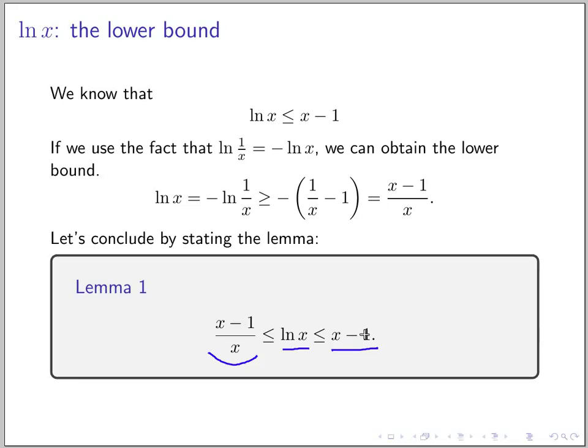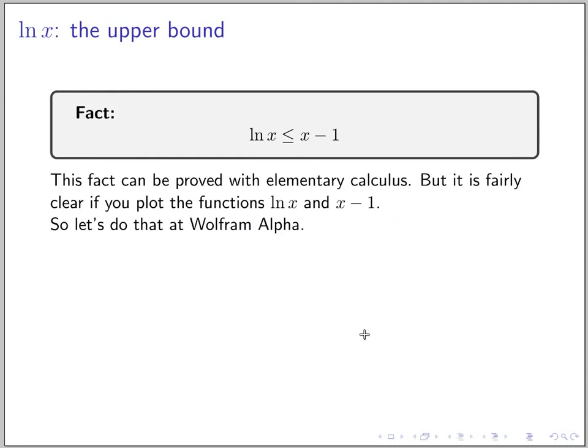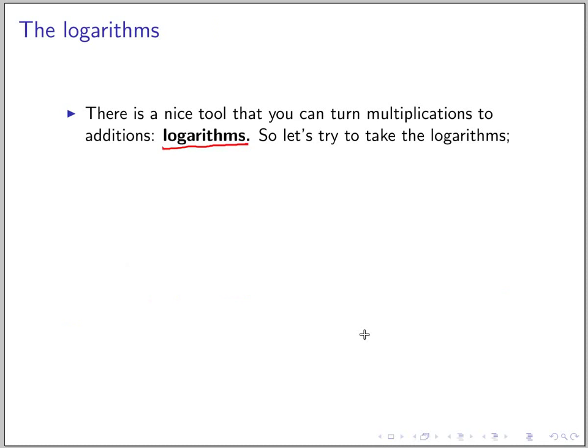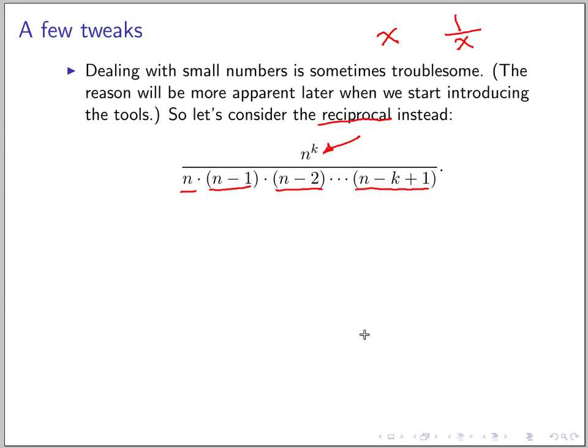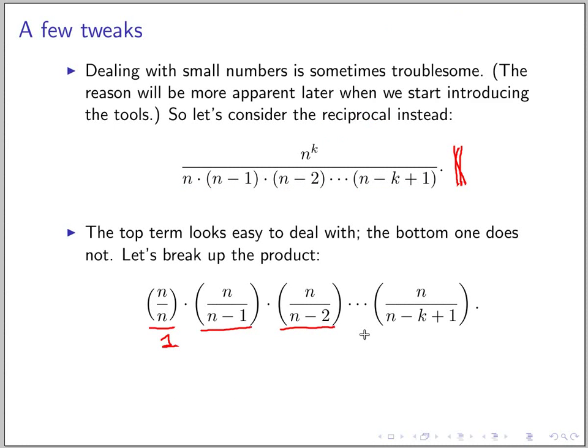So let's summarize — we have this lemma. If you have ln of x, it's going to be at most x minus 1, and at least (x minus 1) over x. Now we can just plug it in and do some math to get the approximation of this term.